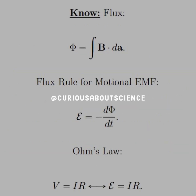What we need to know for this problem is the flux, which is the area integral of the field — so B dot dA. We also need the flux rule for motional EMF, which is E equals the negative time derivative of the flux. And of course we have Ohm's Law, now written as E equals IR, and then we'll just solve for I.